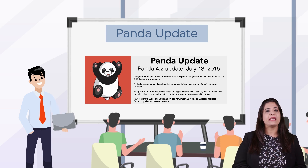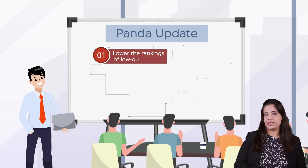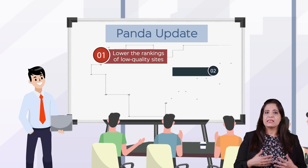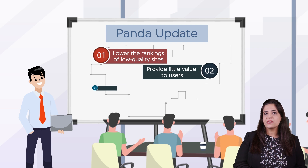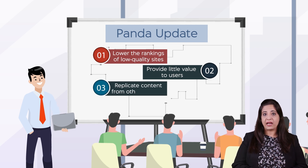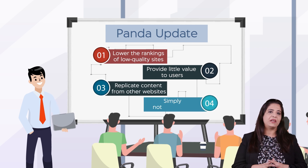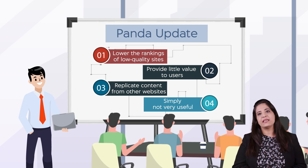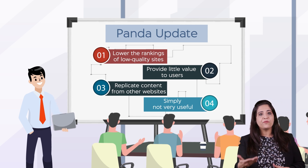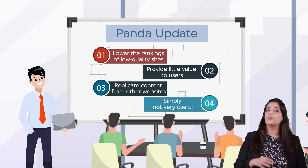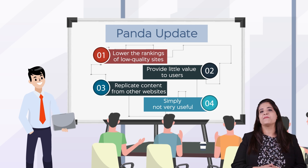This update was aimed to lower the rankings of low-quality sites, such as those that provide little value to users, replicate content from other websites, or are simply not very useful. Simultaneously, it helped to promote and improve the ranks of unique content by doing extensive study.